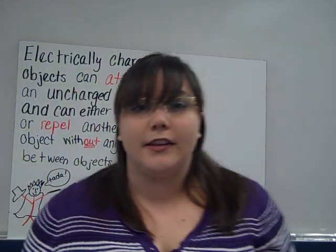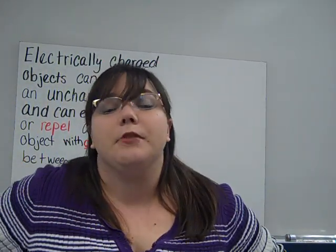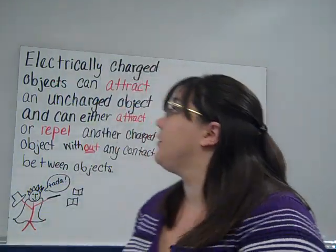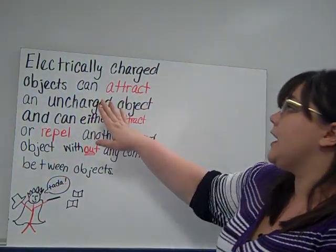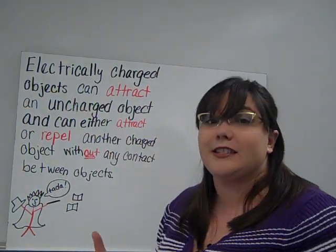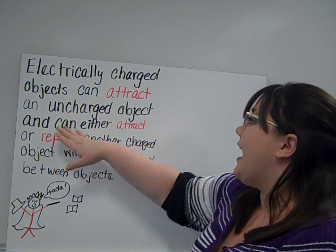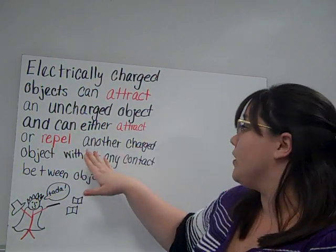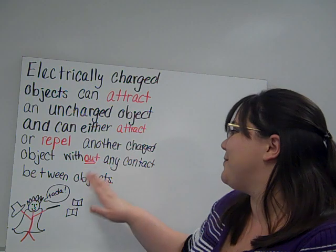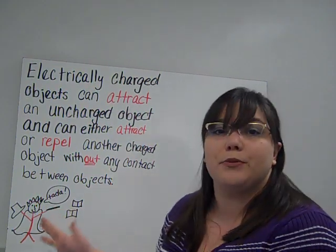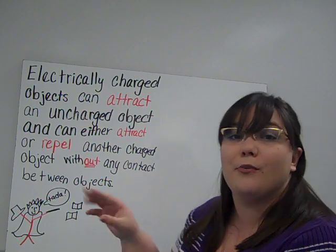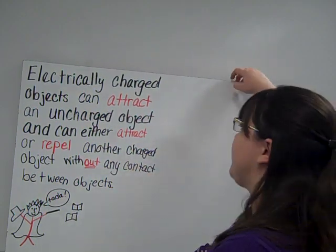Hi guys, and we're back talking about electricity. Today we're going to talk about how electricity can attract and repel other objects. Electrically charged objects can attract an uncharged object — an object that is not electrically charged — and can either attract or repel another charged object without any contact between the two objects. Kind of like magic, they can attract or repel without touching.